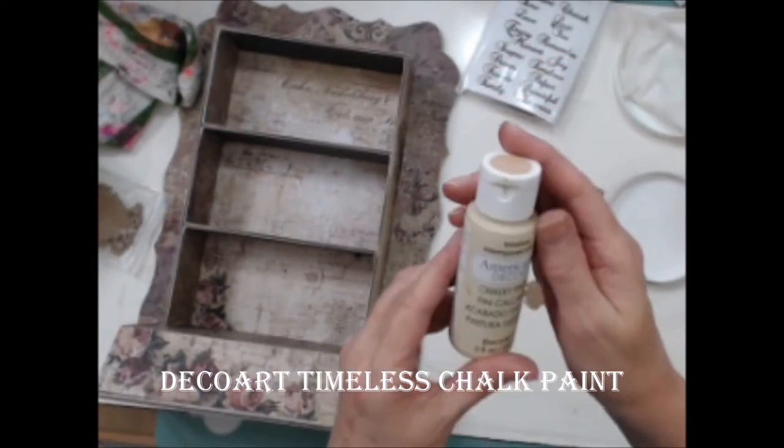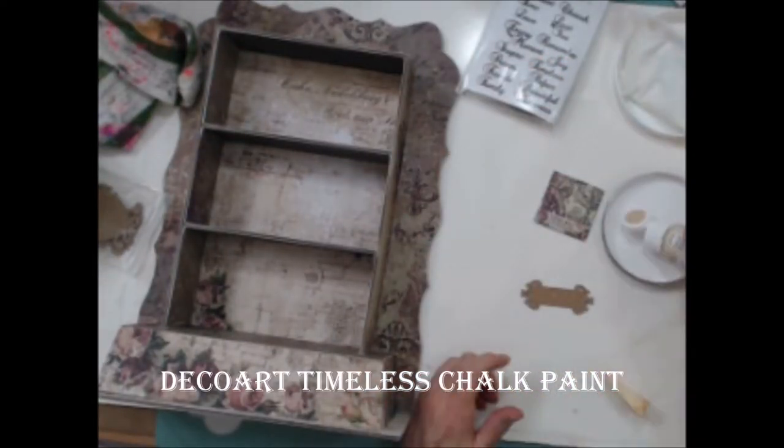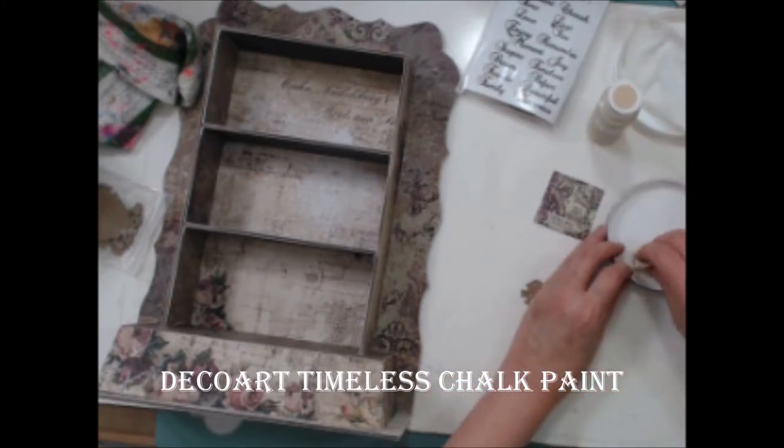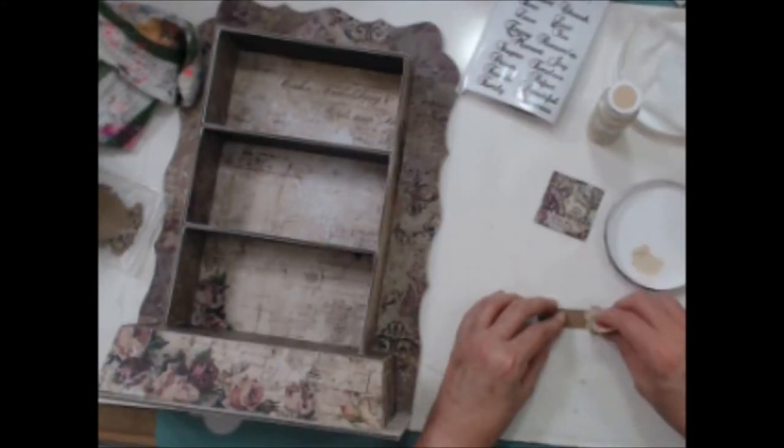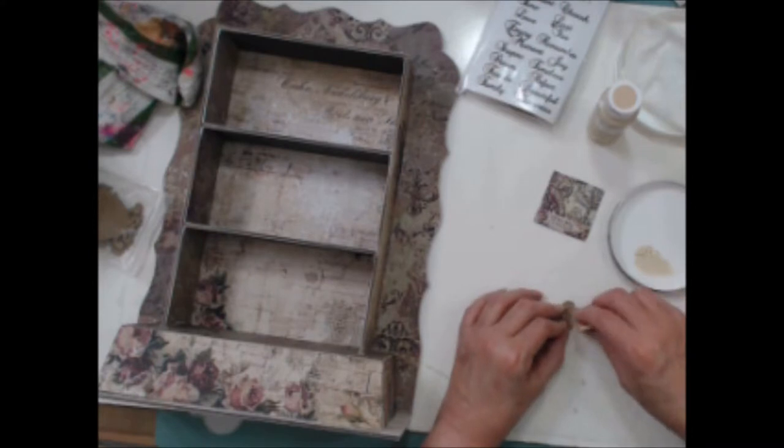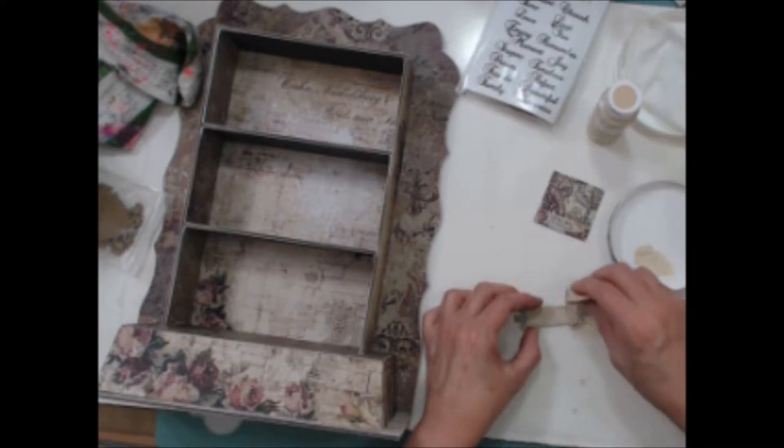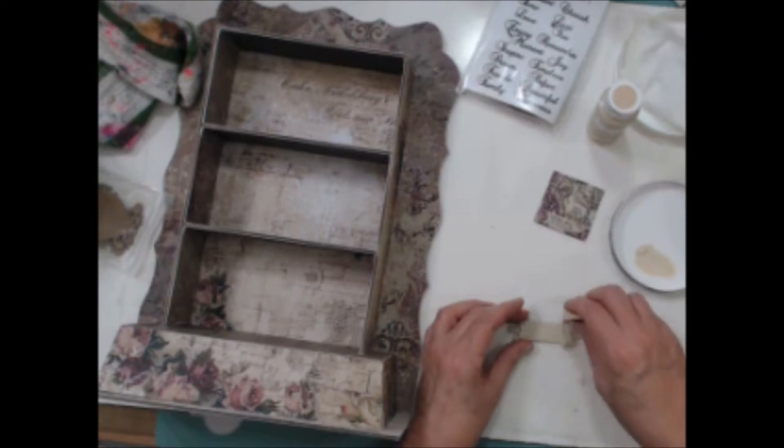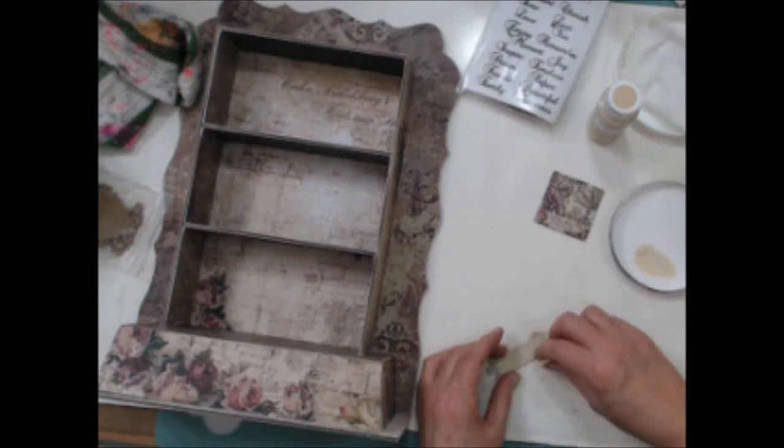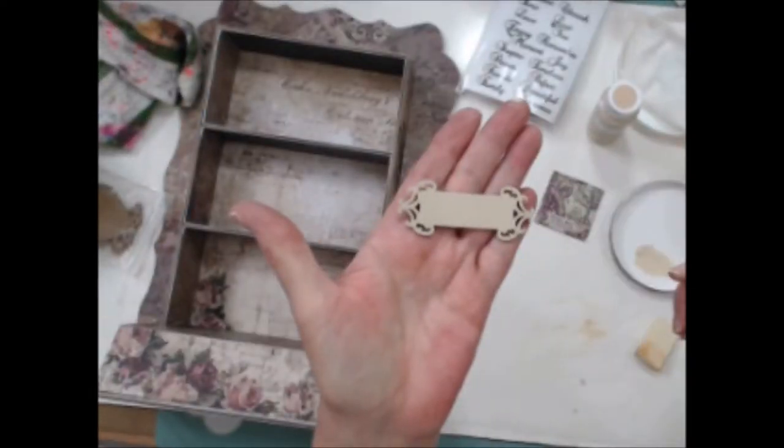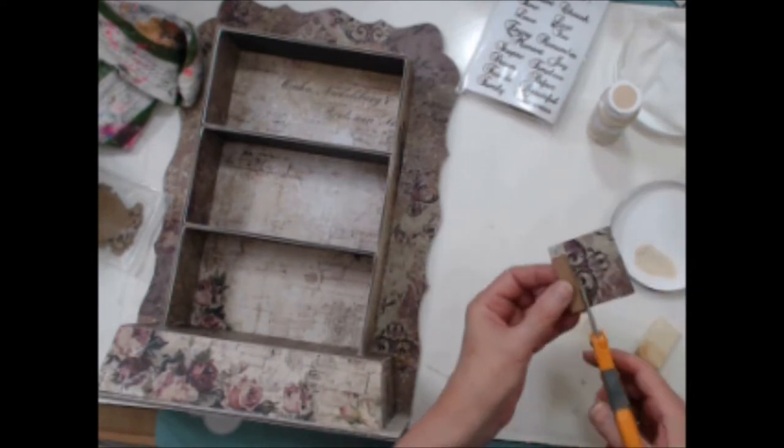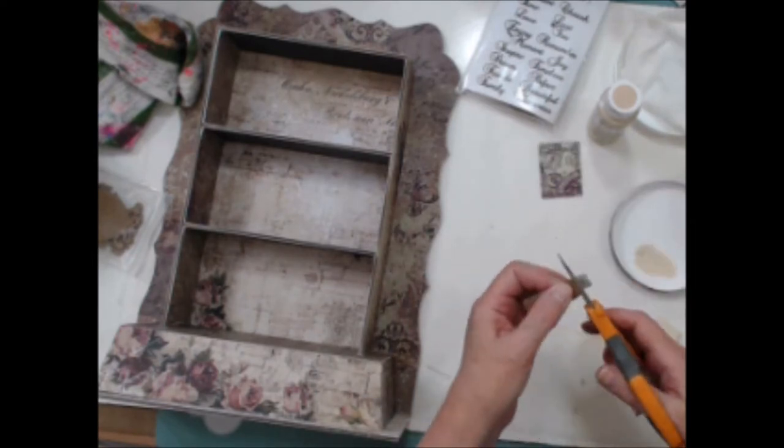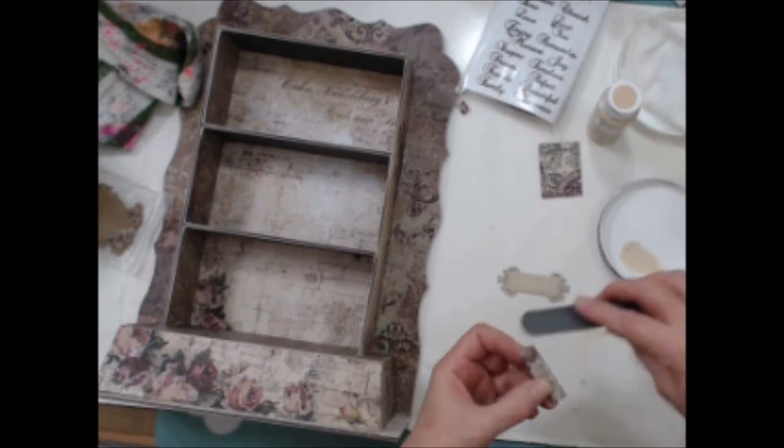While the glue was drying, I painted the bottom label with Deco Art Timeless chalk paint and the flat side of a makeup sponge. Using the flat side allows me to paint the intricate cut chipboard without plugging the holes with paint.